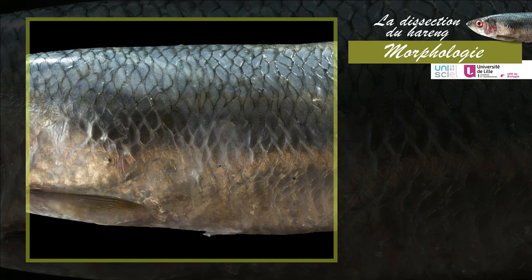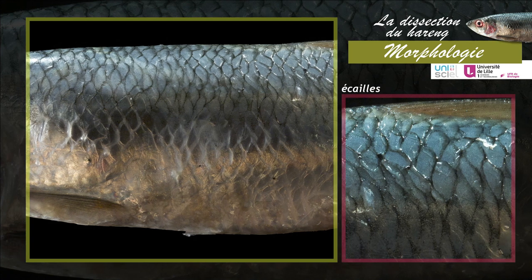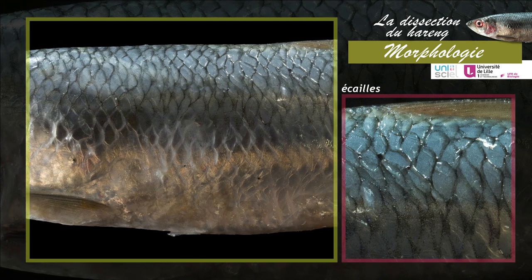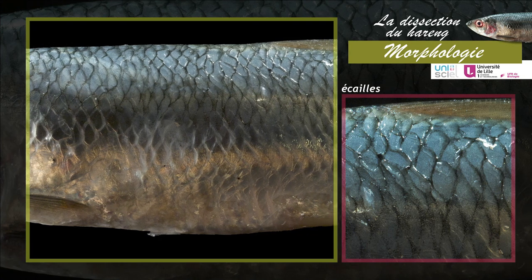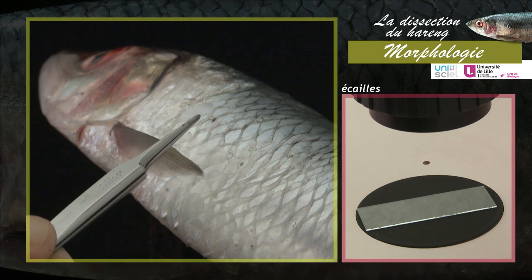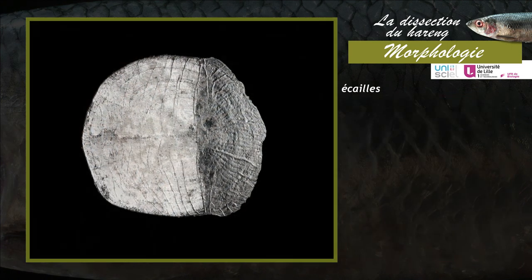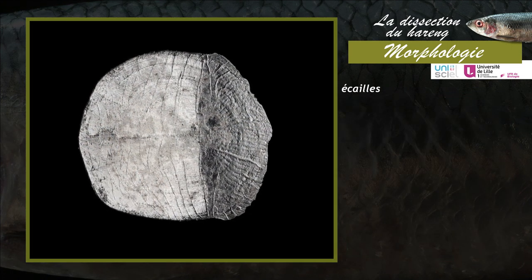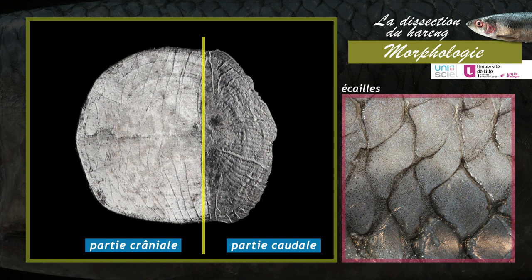Le corps du hareng est recouvert d'écailles dermiques osseuses. Ces écailles, minces et flexibles, sont imbriquées les unes sur les autres, de l'avant vers l'arrière. La structure de l'écaille peut être observée à la loupe binoculaire. Les écailles du hareng sont dites de type cycloïde à cause de leur bord libre arrondi. La partie crâniale de chaque écaille est recouverte par la partie caudale de la précédente.